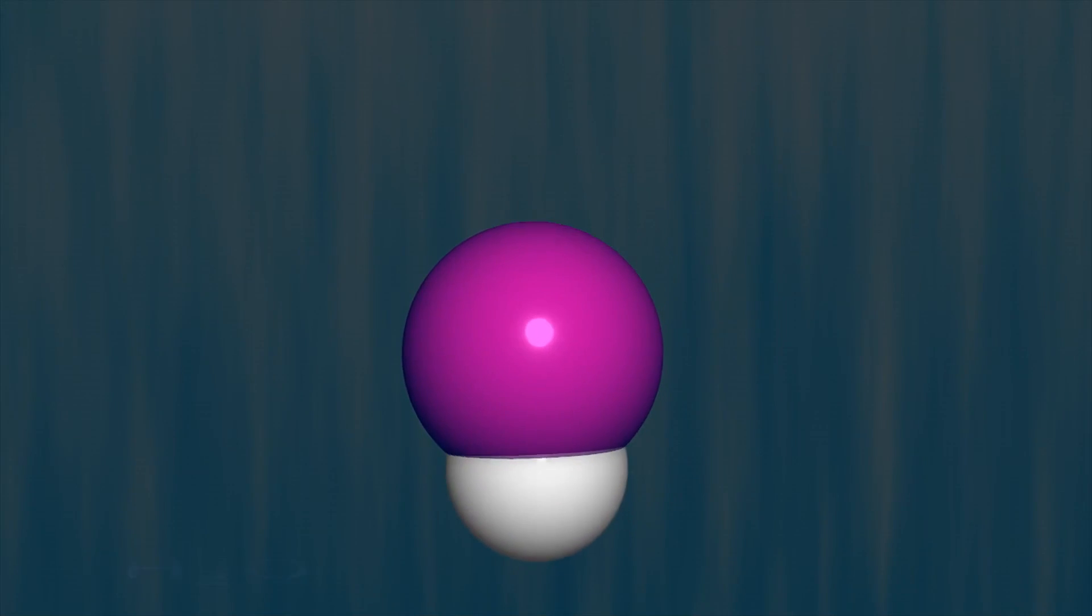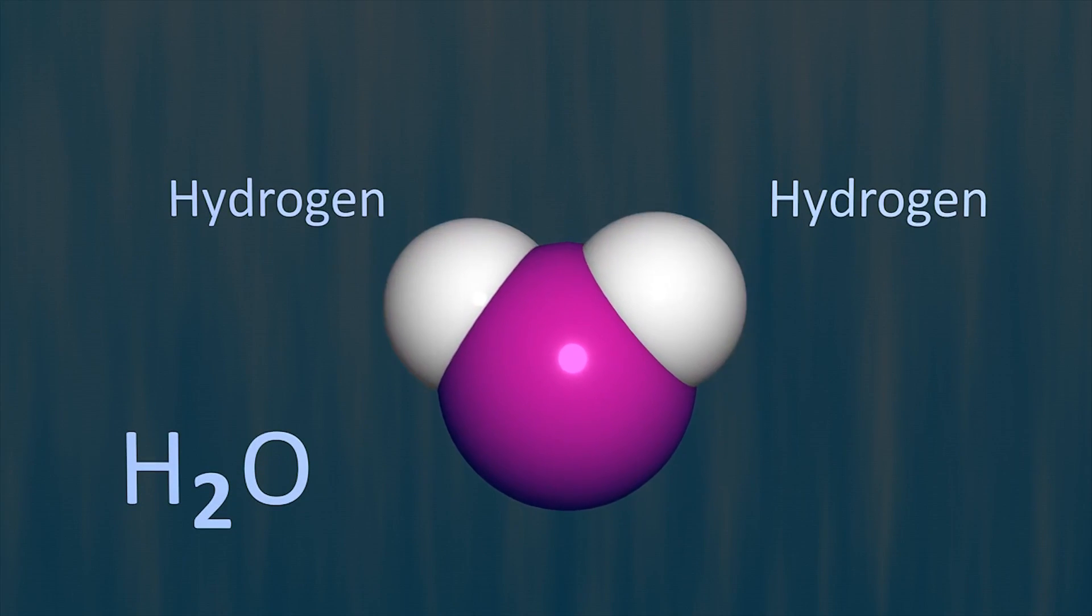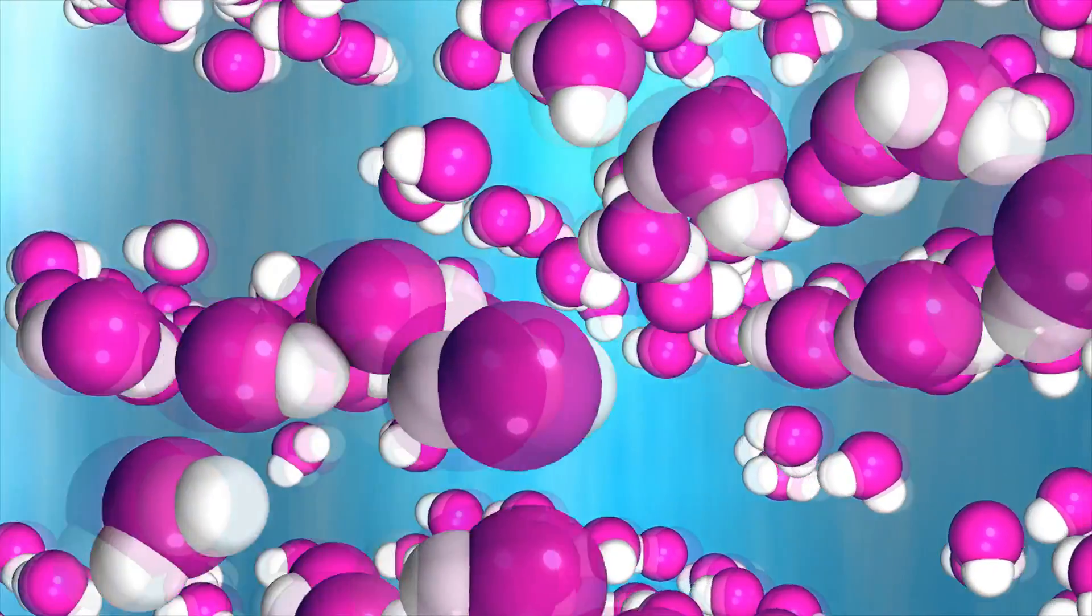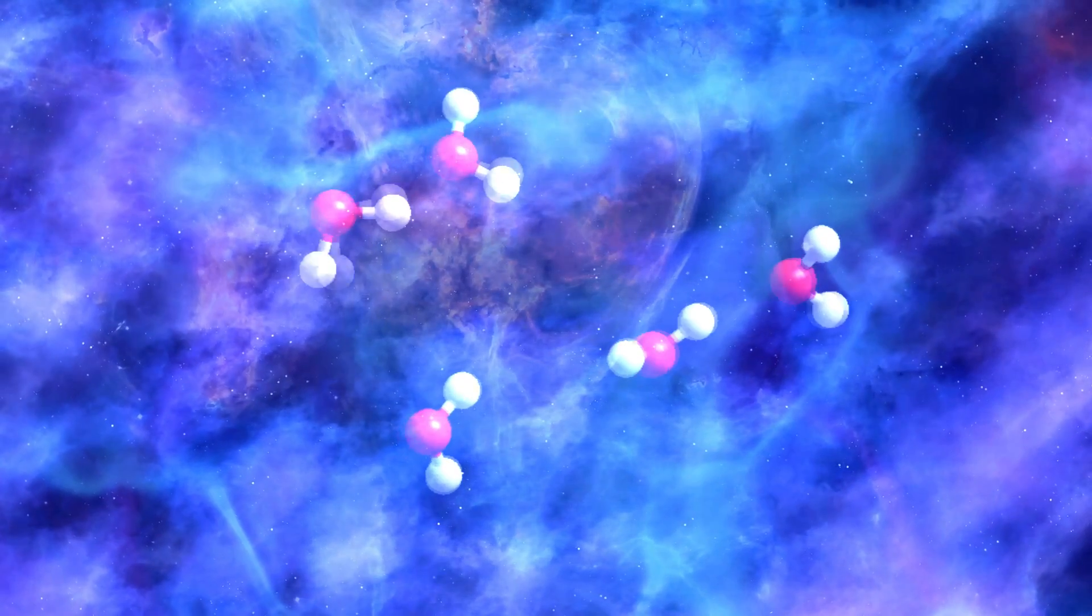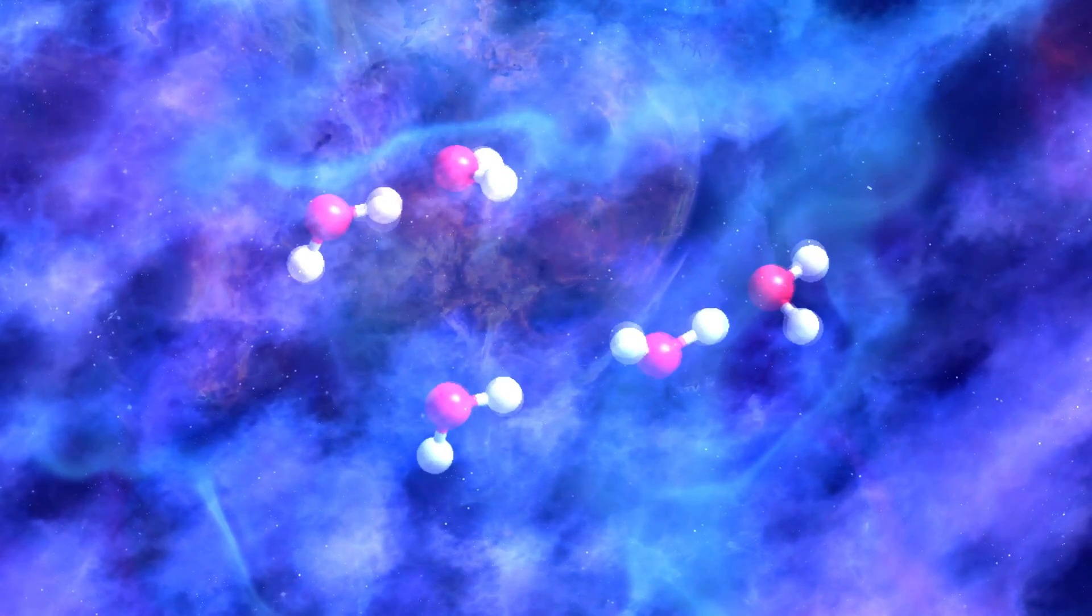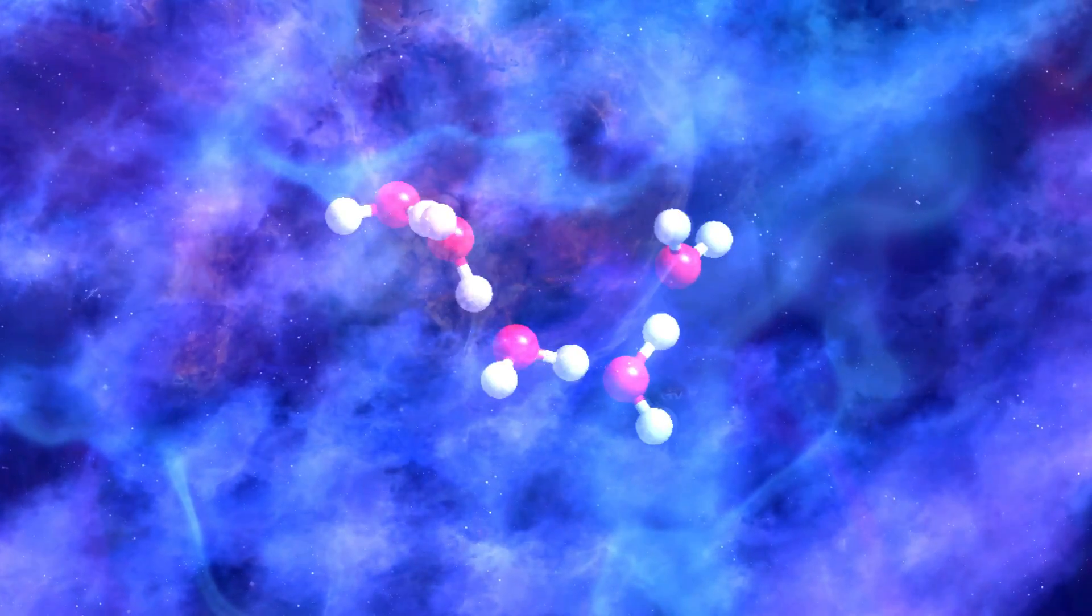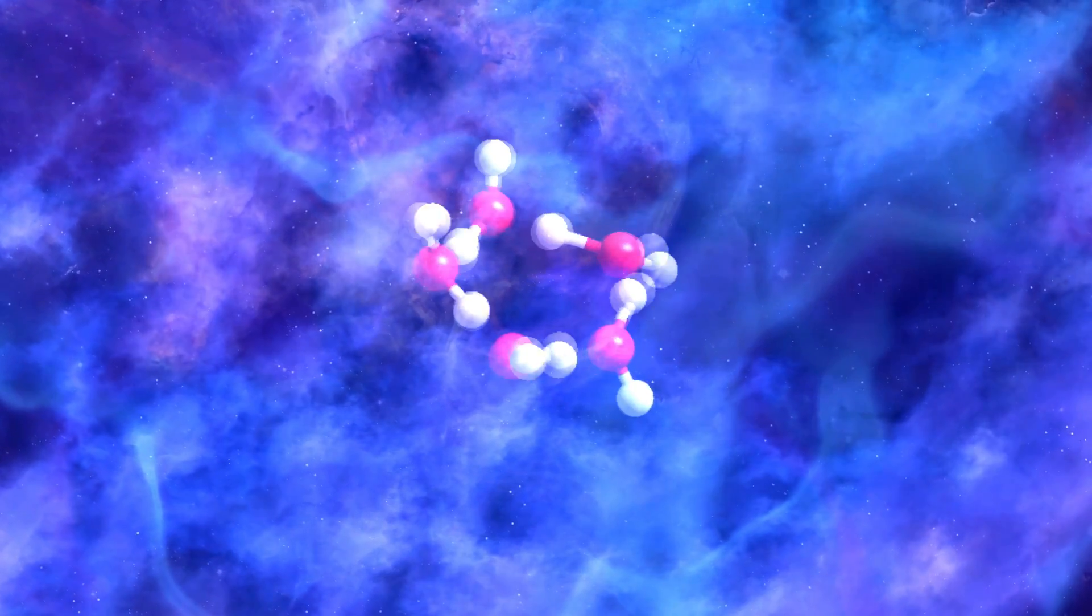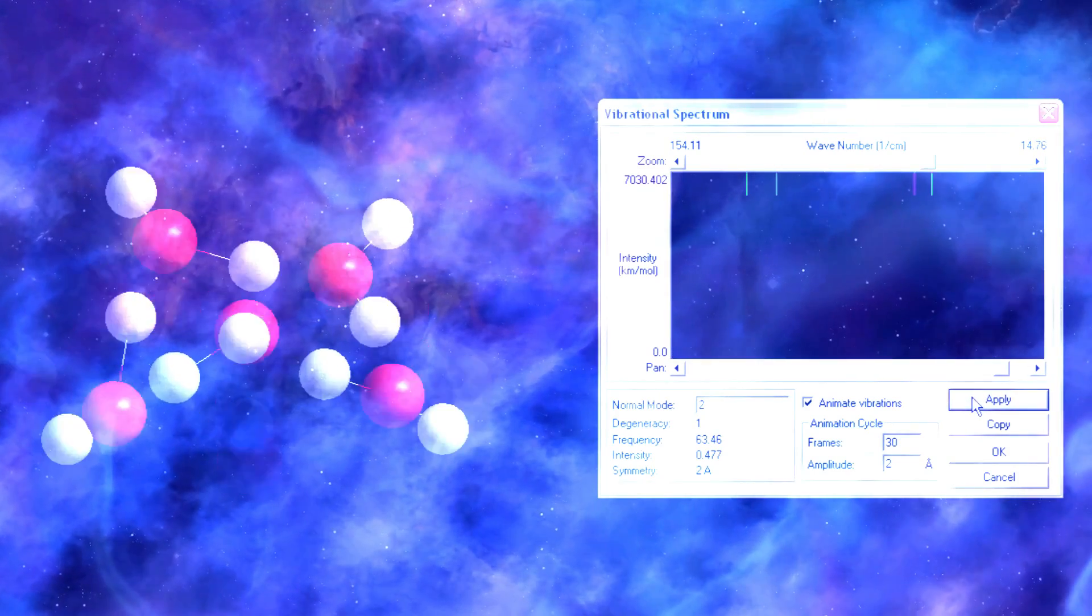We know that water molecules form hydrogen bonds with each other to form liquid water and ice. It is also known that water molecules can bond to form nano-sized clusters. Here we see five water molecules forming a pentagonal nanocluster. This nanocluster vibrates in the terahertz region of the electromagnetic spectrum.